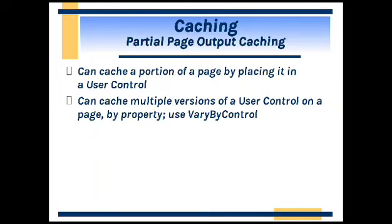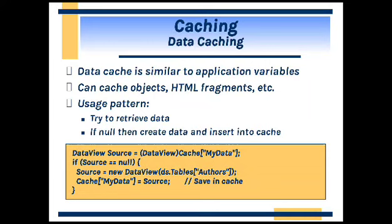So we are holding a partial page output in a particular control. The second type of caching is data caching. This is similar to an application variable — whatever value we are going to hold can be maintained as data caching.